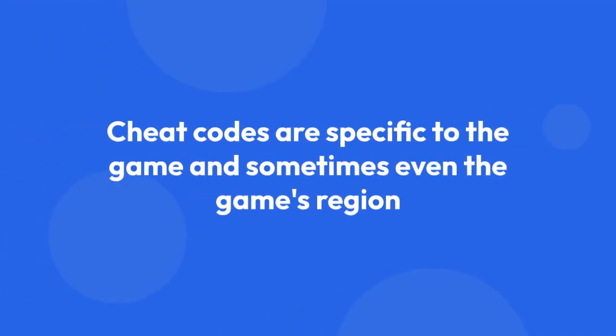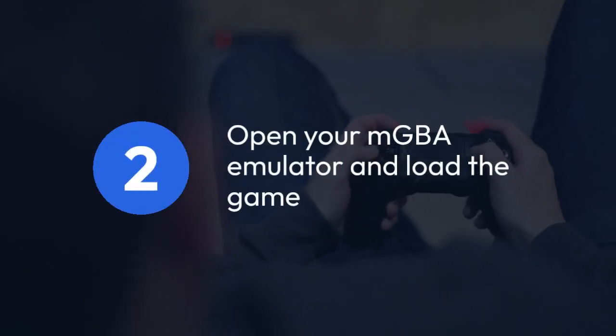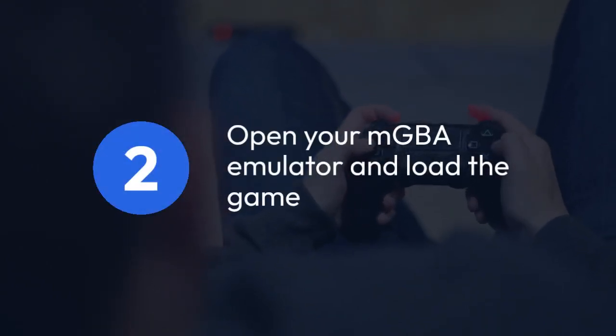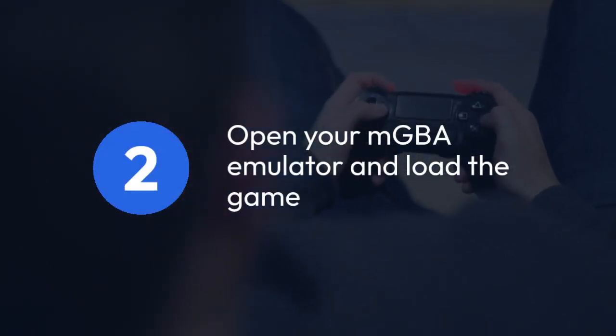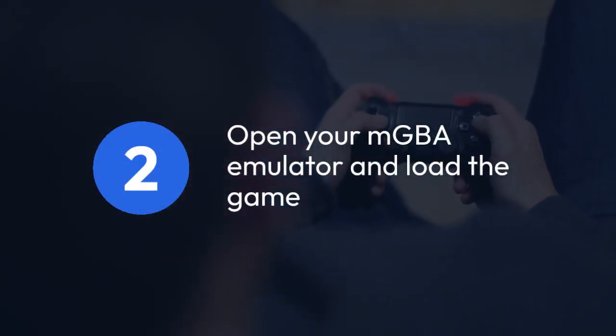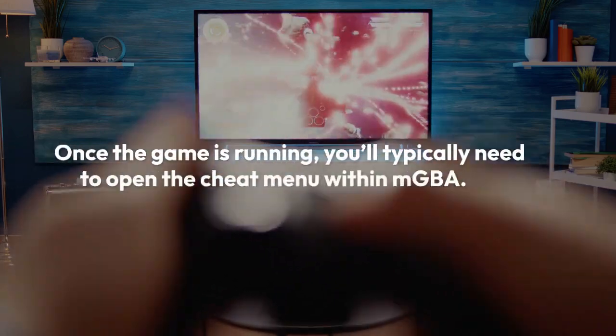Remember that cheat codes are specific to the game, and sometimes even the game's region, like US or EU. Next, open your MGBA emulator and load the game you wish to cheat in.